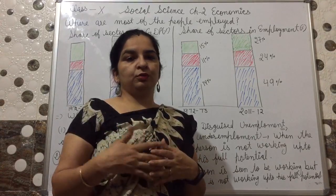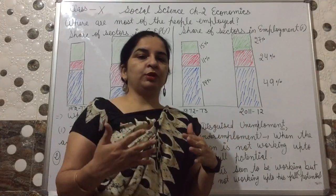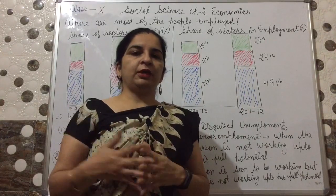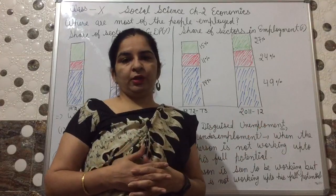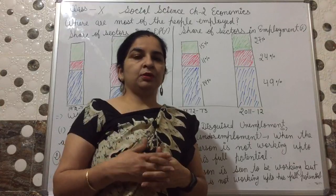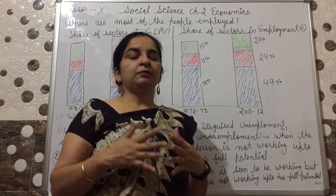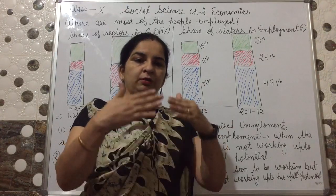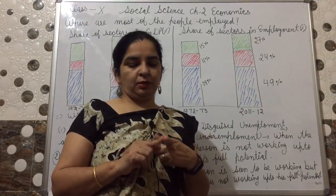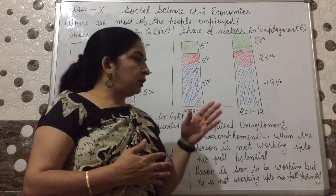This disguised unemployment is found mostly in the primary sector, but it also exists in the secondary and tertiary sectors. For example in the tertiary sector: suppose earlier there was only one barber shop in your neighborhood serving a thousand people, and then two more shops opened. Now those thousand people are spread across three barbers, reducing each barber's income. So disguised unemployment can be found in all three sectors.